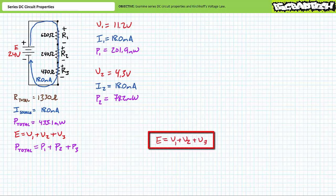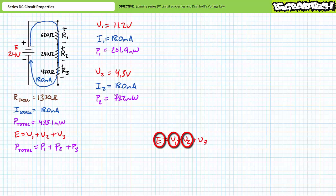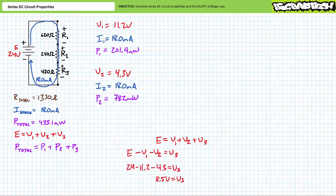Let's look at voltage distribution first. There's one voltage rise of 24 volts and three voltage drops V1, V2, and V3. Therefore V1 plus V2 plus V3 equals supply voltage E of 24 volts. We've solved for both V1 and V2 through manipulations of Ohm's law. Only one unknown exists in this equation, that being V3. An algebraic manipulation of the KVL equation for this circuit demonstrates that V3 equals E minus V1 minus V2. Substituting in our known values demonstrates that V3 will be the remaining 8.5 volt drop.